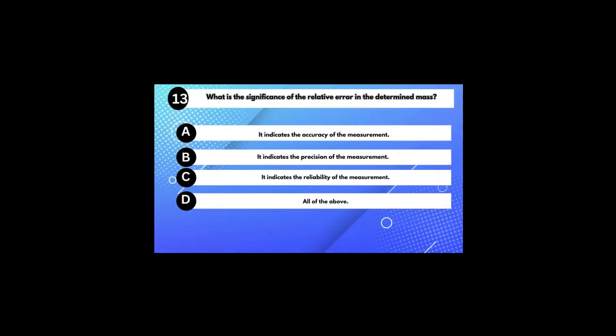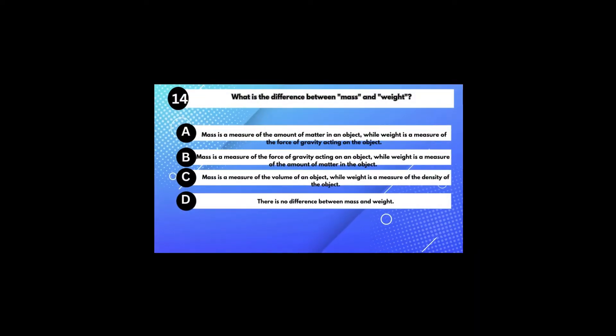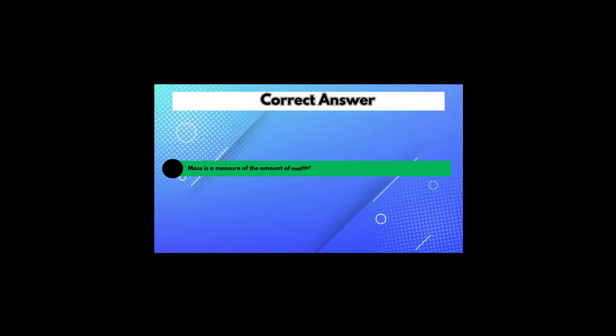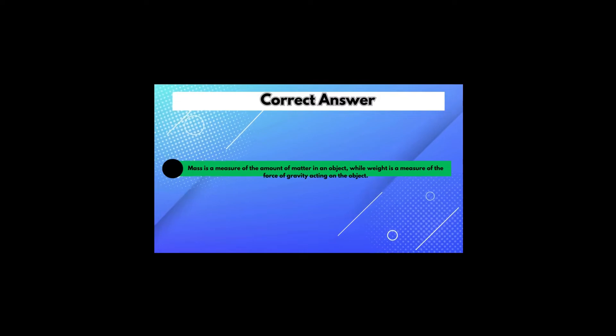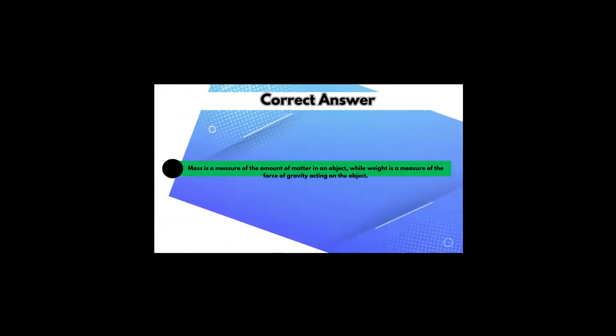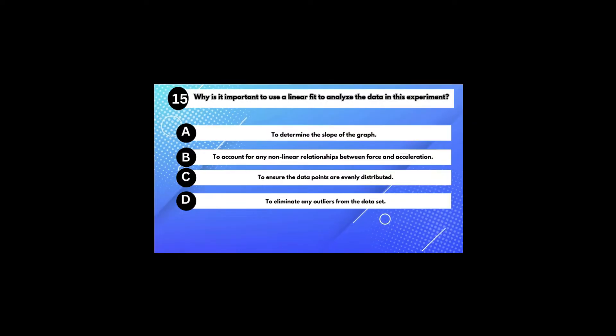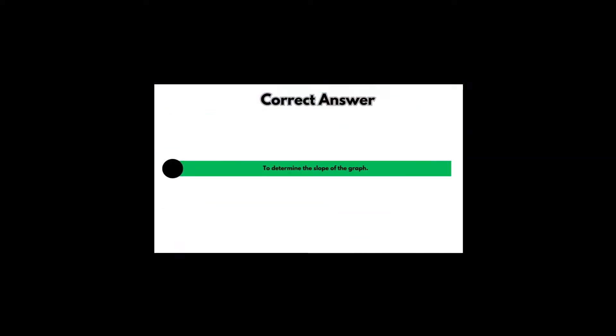What is the significance of the relative error in the determined mass? Answer D: All of the above. What is the difference between mass and weight? Answer A: Mass is a measure of the amount of matter in an object, while weight is a measure of the force of gravity acting on the object. Why is it important to use a linear fit to analyze the data? Answer A: To determine the slope of the graph.